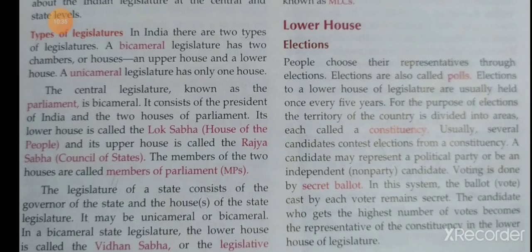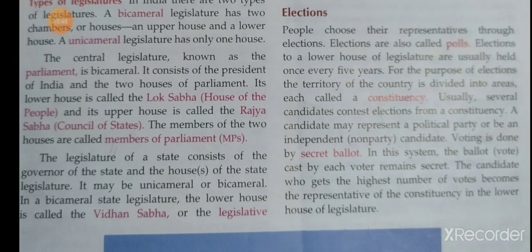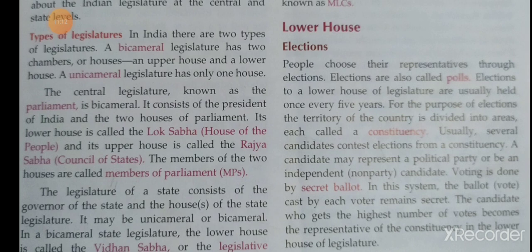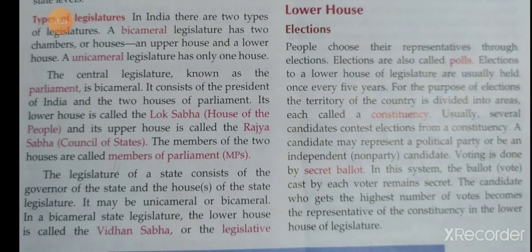An ordinance is issued in an urgent or emergency situation when parliament is not in session and an urgent need to pass a law arises. In such a situation, the President can issue an ordinance. However, if parliament after reassembling does not declare it valid within six weeks, the ordinance becomes invalid.